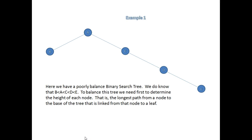Here we have a poorly balanced binary search tree, and we know that B is less than A, which is less than C, which is less than D, which is less than E. To balance this tree we need first to determine the height of each node — that is the longest path from a node to a leaf.